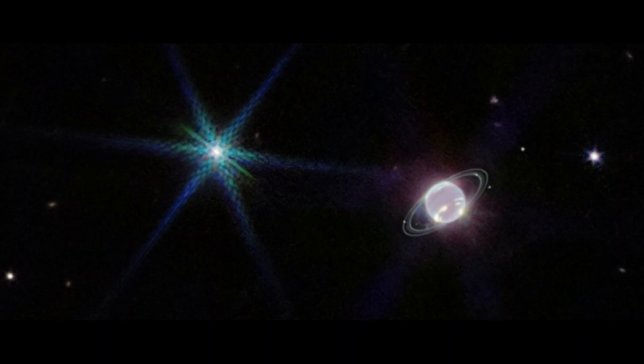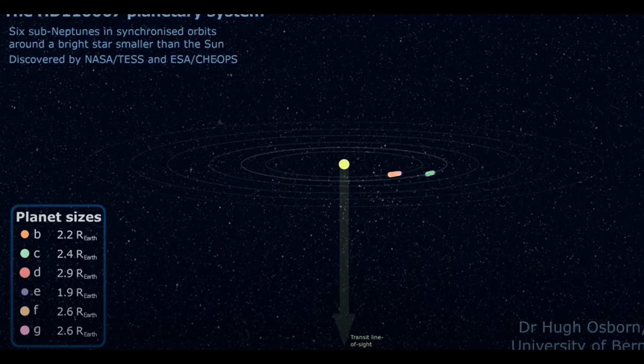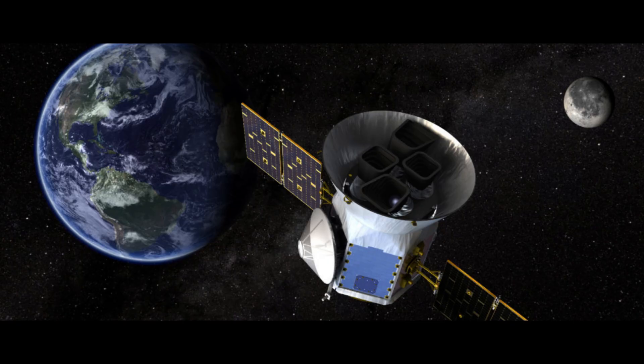These planets are likely not going to support life, as they are all likely too warm and too large. But still the whole sub-Neptune angle is the intriguing part, because we don't yet know why our solar system does not have one.